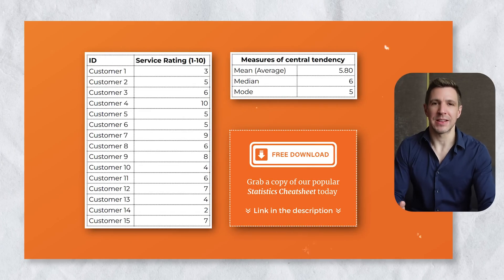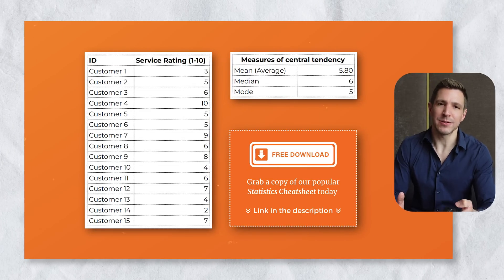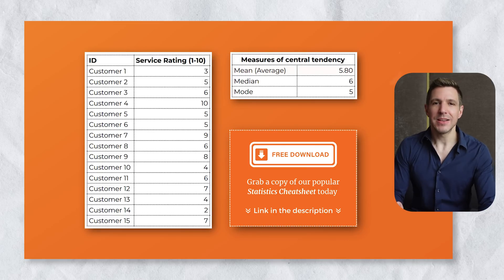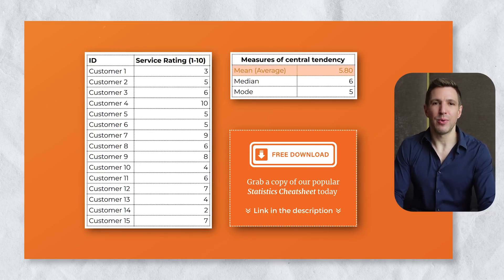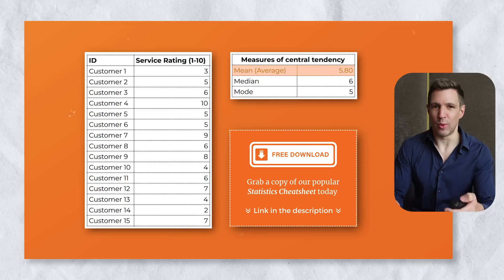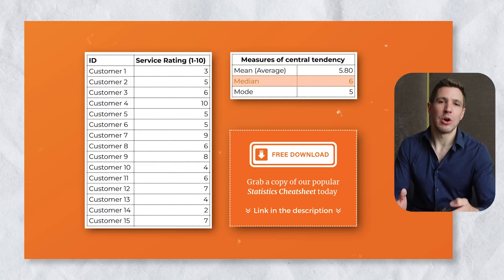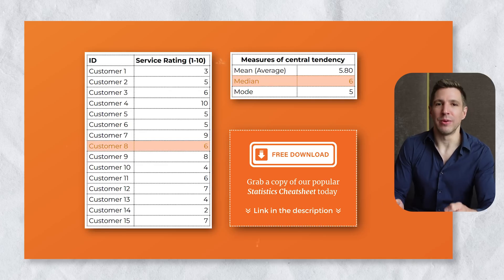To make this all a little more tangible, let's take a look at a practical example. Here we have a sample data set that reflects the service ratings on a scale of 1 to 10 for a specific business from 15 customers. The mean of 5.8 is simply the average rating across all 15 customers — the sum of all ratings divided by 15. Next, we have a median of 6, meaning that if you were to list all the responses in order from lowest to highest, customer number 8 would be right in the middle with their service rating being 6.